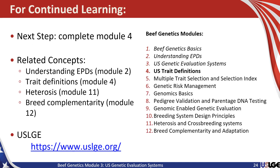For continued learning, I would encourage you to complete module number four, which is a discussion of U.S. trait definitions. Some related concepts to our discussion here include understanding EPDs in module two, trait definitions in module four, a discussion of heterosis and hybrid vigor in module 11, and an overview of breed complementarity in module 12. For more information on the U.S. Livestock Genetics Export Group, please see their website at https://www.uslge.org.